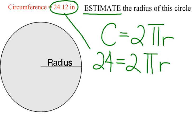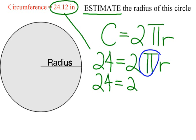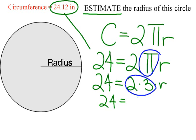24 equals 2 pi, and r is what we're looking for. Now, pi is 3.14159... If we were to round pi to the nearest whole number, it's 3. So I am going to go ahead and replace pi with 3. I will have 24 equals 2 times 3 times r. 2 times 3 is 6, so now I have 24 equals 6r.